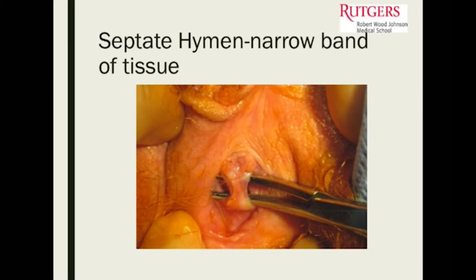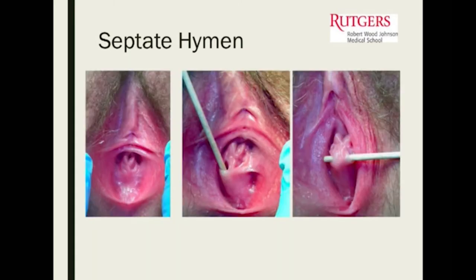We had a patient with a septated hymen — a span of tissue that went vertically. What we did was take her to the OR and excised that. When you identify this, you have to examine her, go with what her history is, and examine her. The treatment for it can't be done in the office for young patients — we often take them to the operating room and excise the band of tissue that's not supposed to be there.